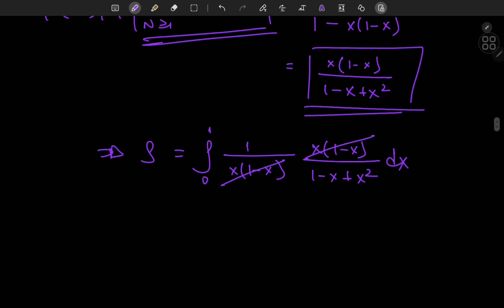There we go, some wonderful cancellation. And we're now left with the integral from 0 to 1 of dx divided by x squared minus x plus 1.